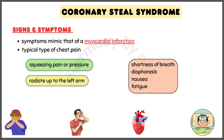Symptoms of Coronary Steal Syndrome are similar to myocardial infarction and include a typical type of chest pain, which is described as a squeezing pain or pressure that might radiate up to the left arm, jaw, shoulders, or back.